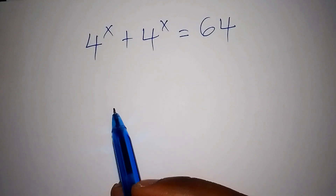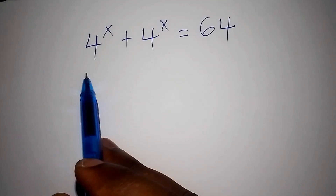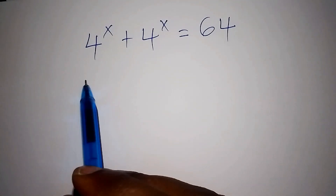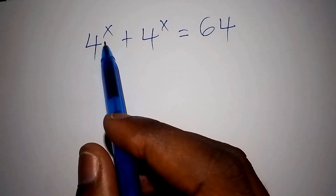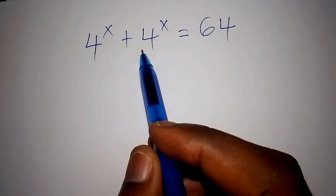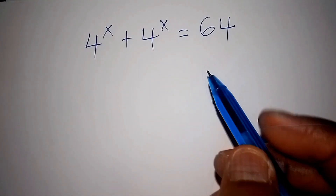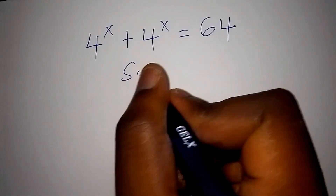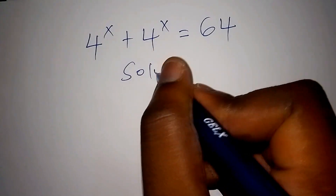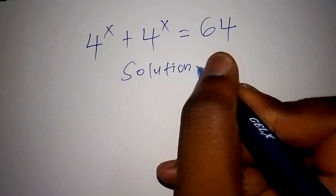Hello viewers. Do you know how to solve this math problem? Let us work it out within the shortest time possible. 4 to the power of x plus 4 to the power of x is equals to 64. Let us start with the solution. Make sure you watch this video up to the end.